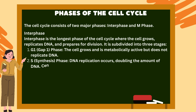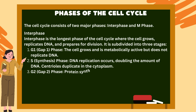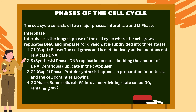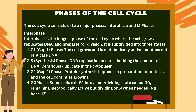G1 — Gap 1 Phase: The cell grows and is metabolically active but does not replicate DNA. S — Synthesis Phase: DNA replication occurs, doubling the amount of DNA. Centrioles duplicate in the cytoplasm. G2 — Gap 2 Phase: Protein synthesis happens in preparation for mitosis and the cell continues growing.